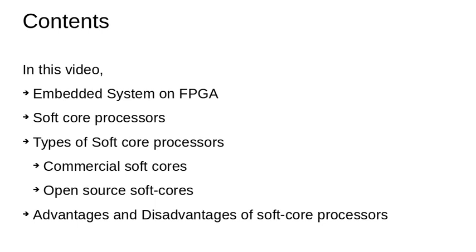In this video, we will talk about the embedded system and how to implement an embedded system on FPGA. The second question we will address is what is the soft core processor and what are the types of soft core processors, such as commercial soft core processors and open source soft core processors. In the end, we will discuss the advantages and disadvantages of soft core processors for use in the development of embedded systems.